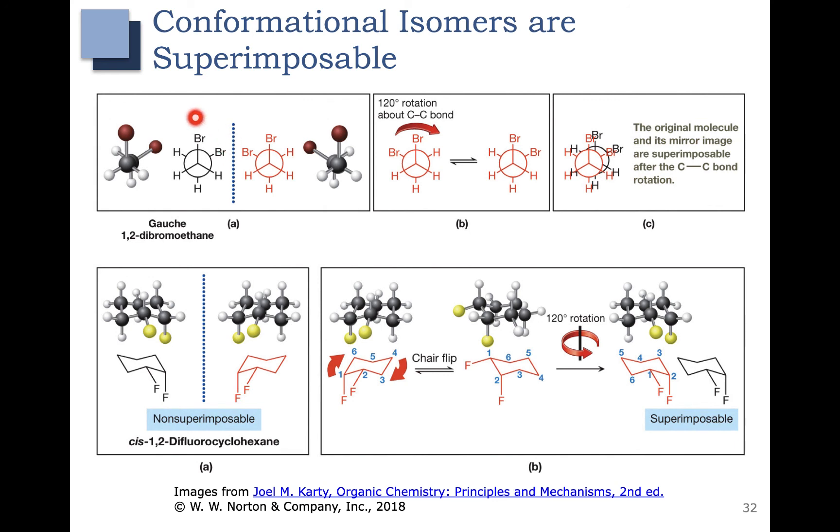For example, this molecule here is the same as this one. All we have to do is do a rotation to get them to be superimposable. Same thing with cyclohexanes. Even though they don't look superimposable and they don't look like they have a plane of symmetry, once you do the ring flip, they do become superimposable compounds, so we consider them to have a plane of symmetry.